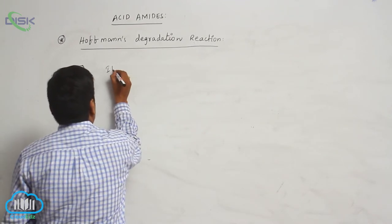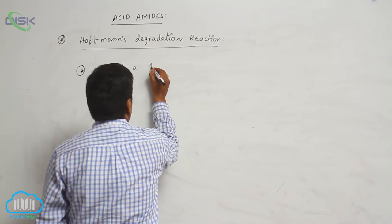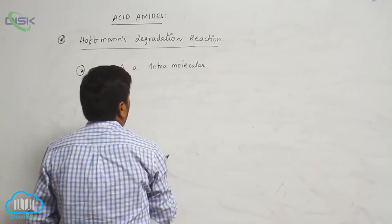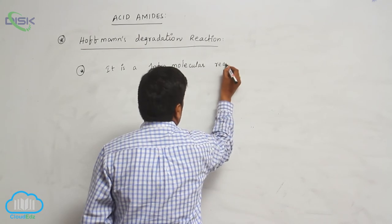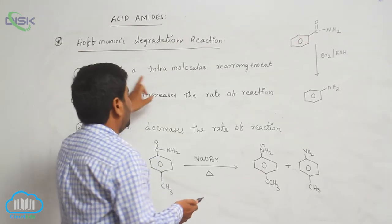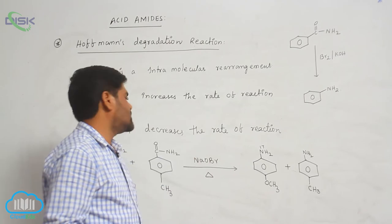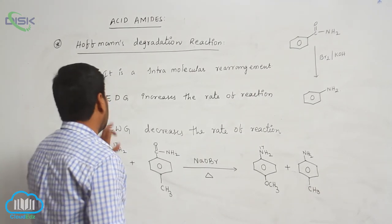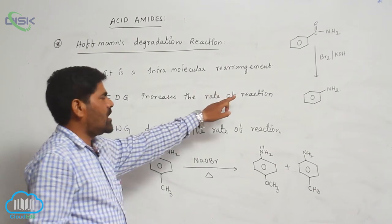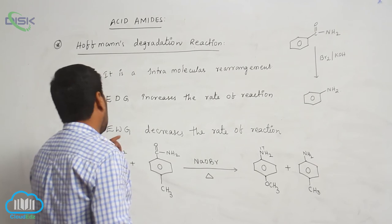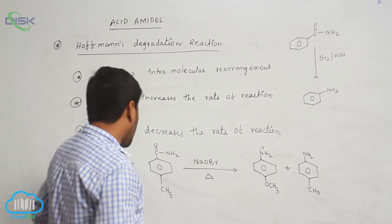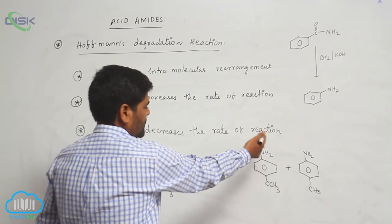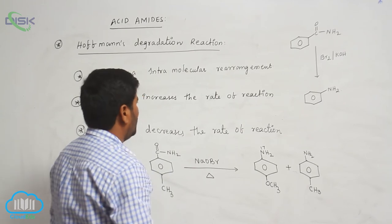This is an intramolecular rearrangement — the same group rearranges within the same molecule to the nitrogen-deficient atom. Electron-donating groups increase the rate of reaction, while electron-withdrawing groups decrease the rate of formation of the primary amine. Mixing two different amides to get a single product confirms it is an intramolecular reaction.